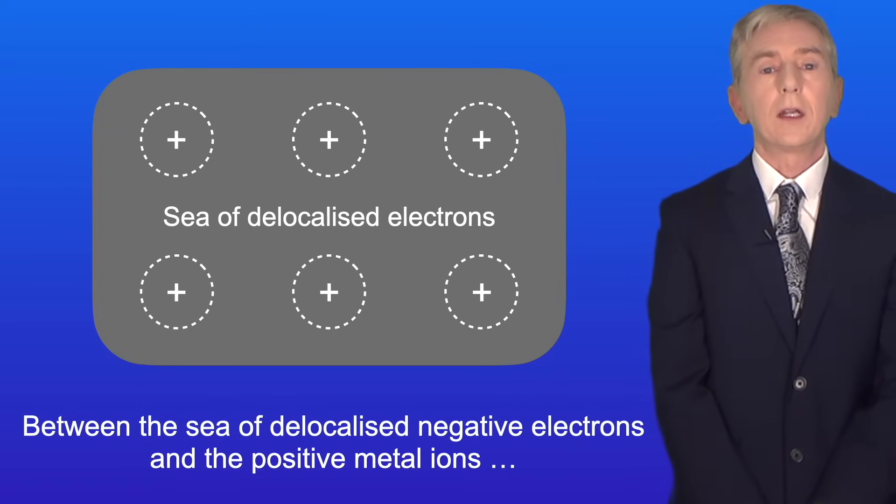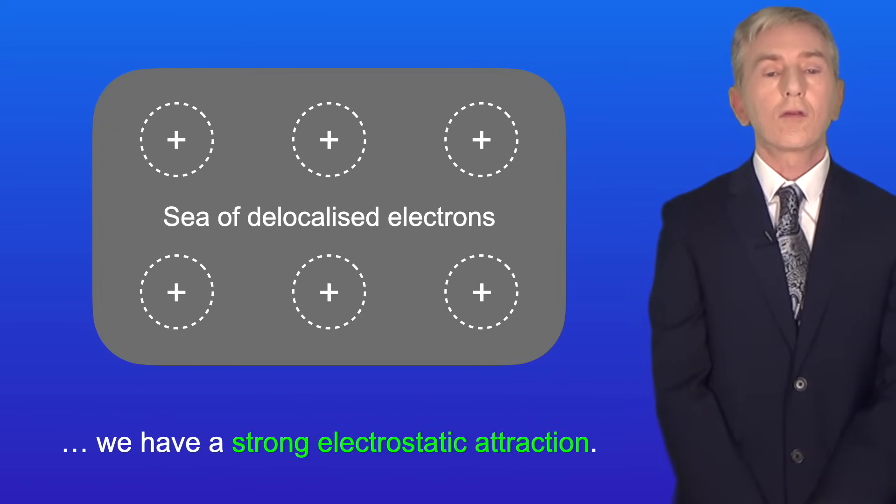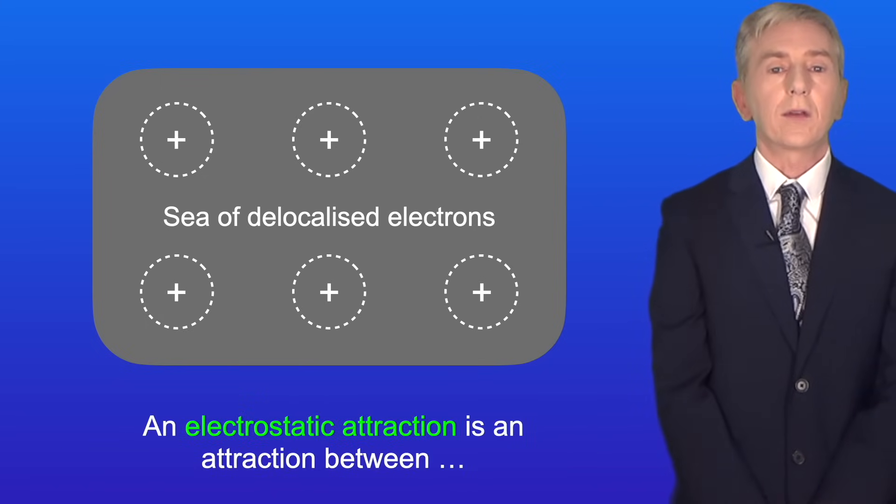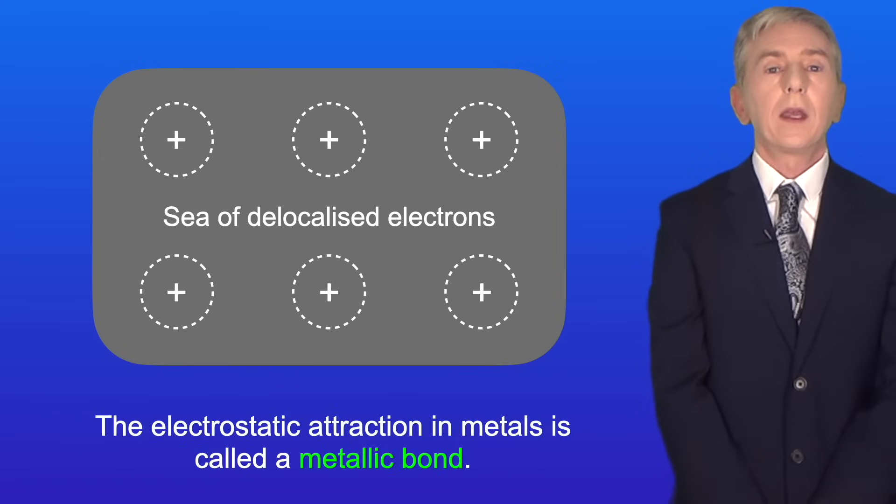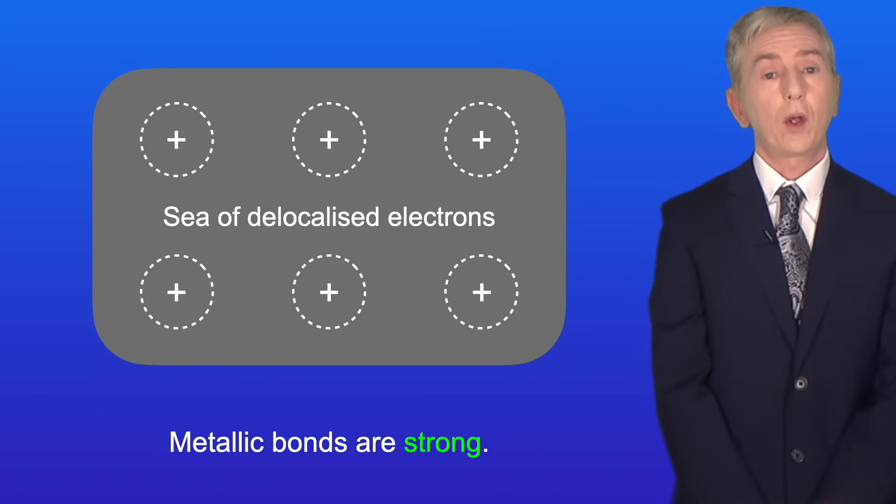Now between the sea of delocalized negative electrons and the positive metal ions we have a strong electrostatic attraction. An electrostatic attraction is an attraction between a positive object and a negative object. The electrostatic attraction in metals is called a metallic bond and metallic bonds are strong.